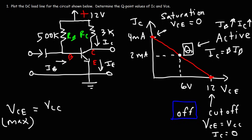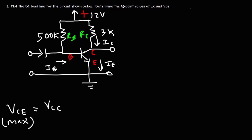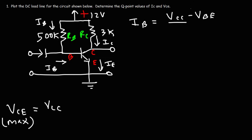Now let's focus on solving this example problem. The first thing we need to do is calculate the base current IB — to do that, we need to calculate the current flowing through RB. It's going to be the voltage across RB, which is the collector supply voltage of 12 volts minus VBE, divided by RB.